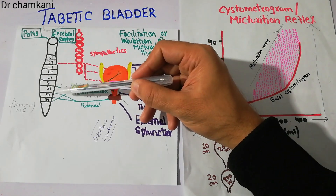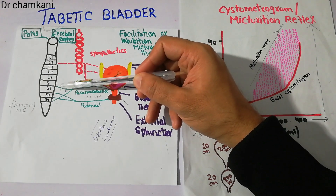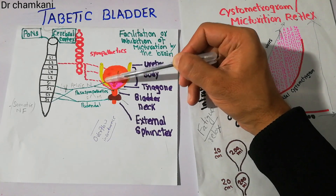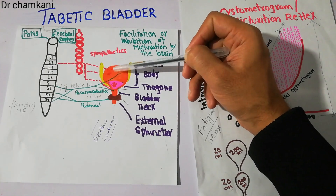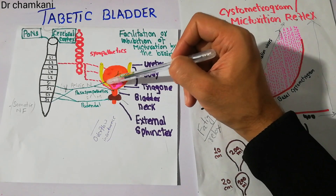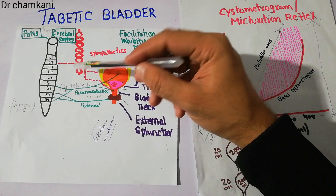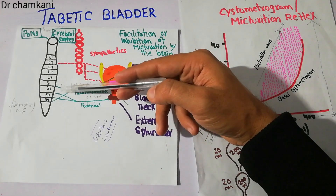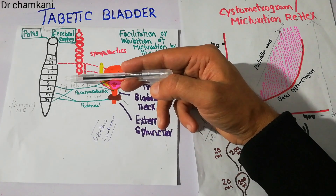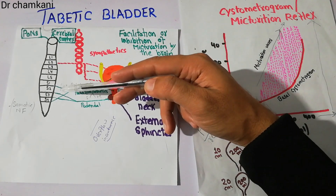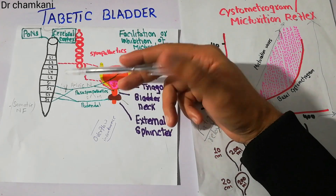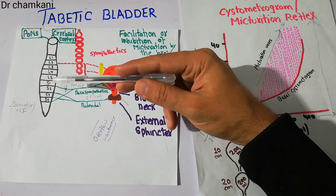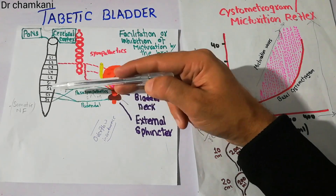If these pathways are damaged, urine will keep accumulating in the urinary bladder, but the sensation will not be transferred to the spinal cord because the pathways have been damaged. Normally, these pathways are damaged by crush injuries, firearm injuries, or accidents that cause damage to the spinal cord around the sacral region.